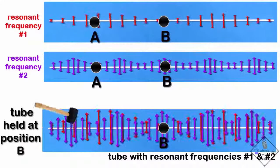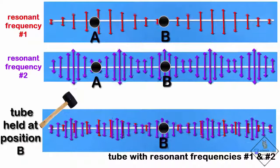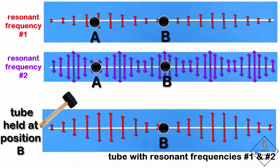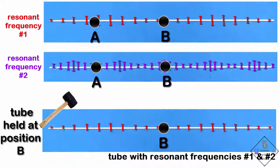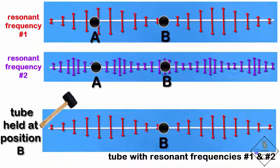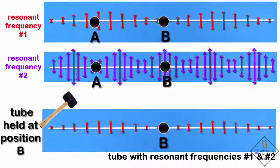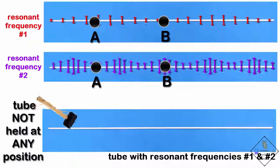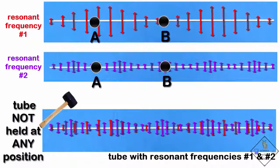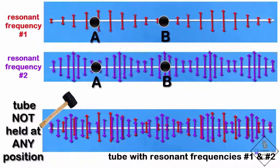If the tube is held at position B, resonant frequency number two loses energy, while resonant frequency number one continues oscillating because position B is a node for resonant frequency number one. If the tube is not held at any position, both frequencies oscillate after being struck with a mallet, and both frequencies remain strong.